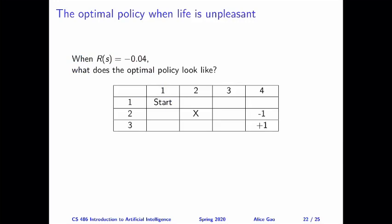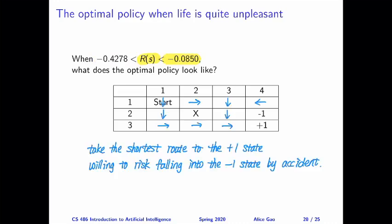Here's the first case. Life is still unpleasant, but it's better than the previous unpleasant case. In this case, the fixed reward value is minus 0.04 — our original value from when I introduced the grid world. To remind you, when life was slightly worse, the agent took the shortest route to the plus-one state, accepting the risk of accidentally falling into the minus-one state.